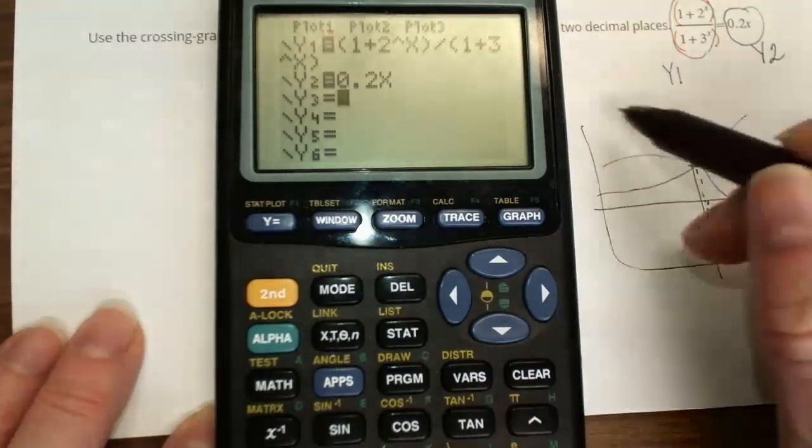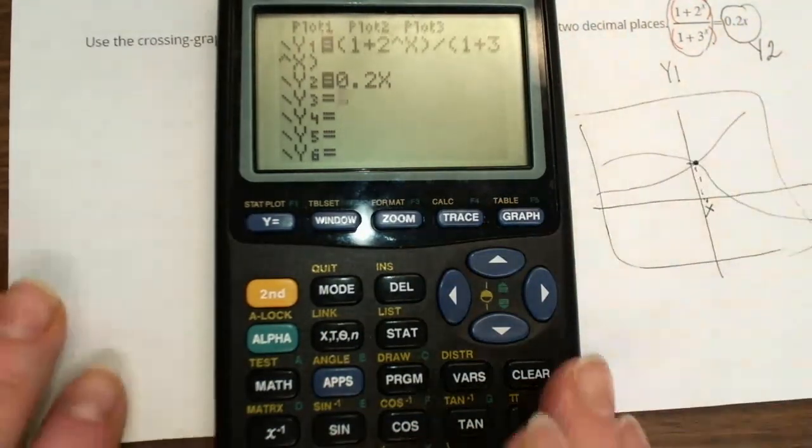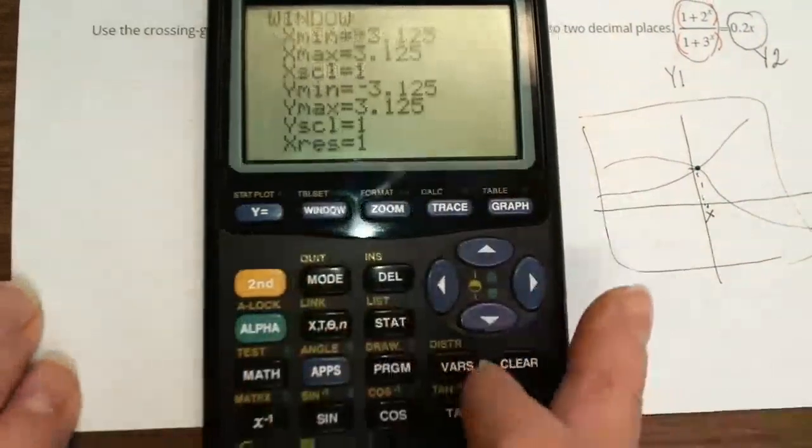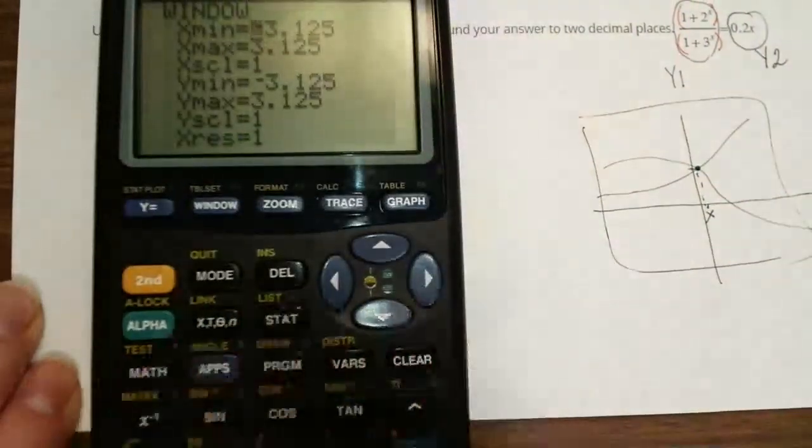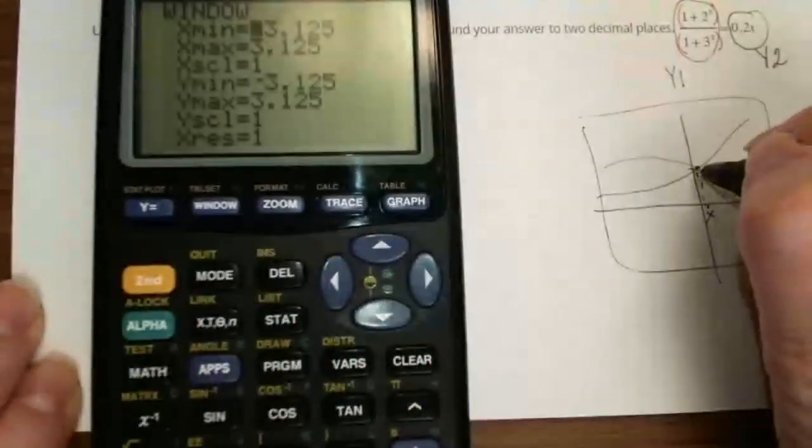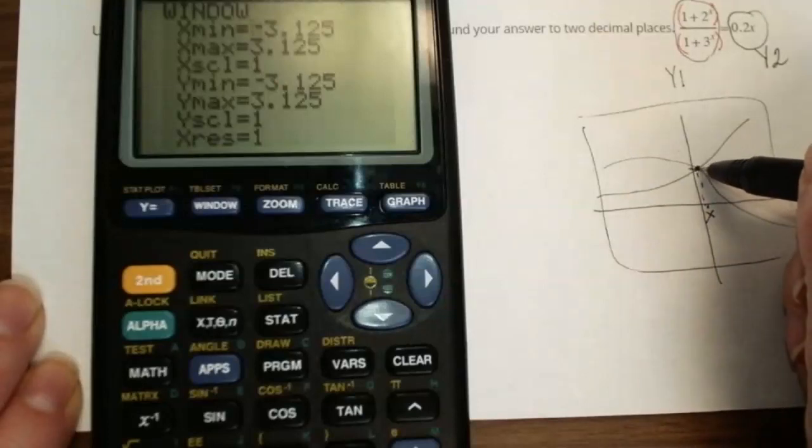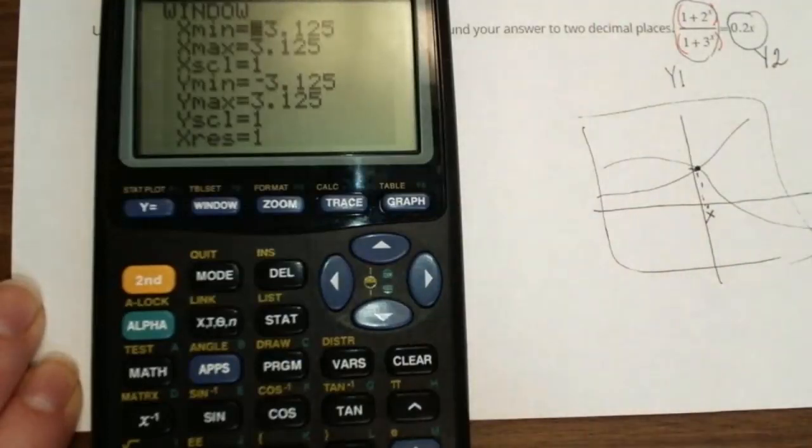So first of all, we need to know the window. Press Window. And again, I don't know what to expect. I don't know where these two lines intersect, so I will start with a big window.